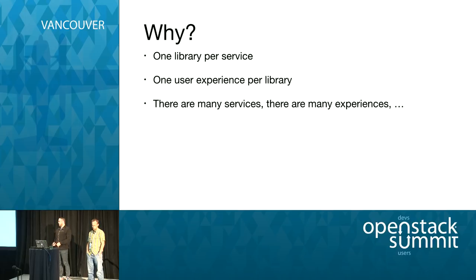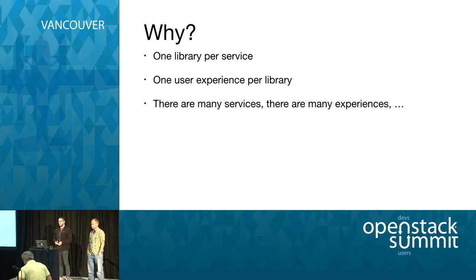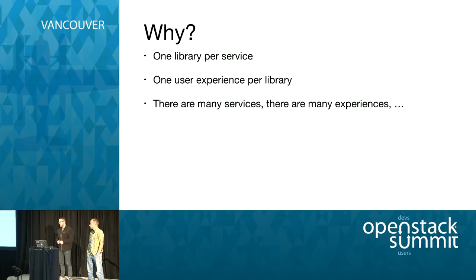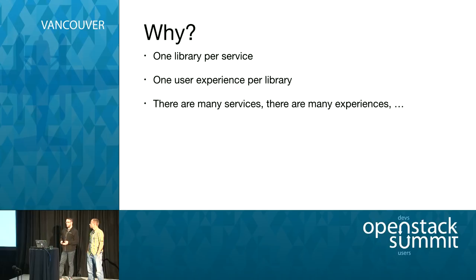When you look at what's out there today, each OpenStack service offers its own client — one library per service. You're probably familiar with these: the Nova client, Glance client, Swift client, and so on. Between StackForge and the OpenStack repos, there are something like 30 clients. Each service has its own library providing its own user experience, structured differently, developed differently, with different dependencies. That complexity mounts up quickly in a distributed system.